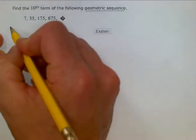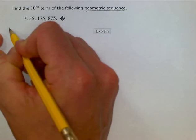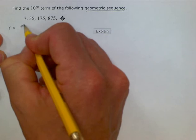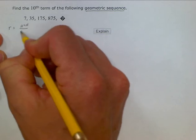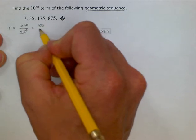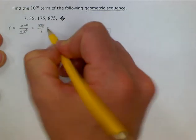Remember that our common ratio r is equal to our second term divided by our first term, which is going to be 35 divided by 7, which is equal to 5.